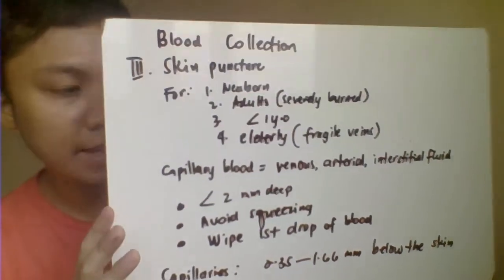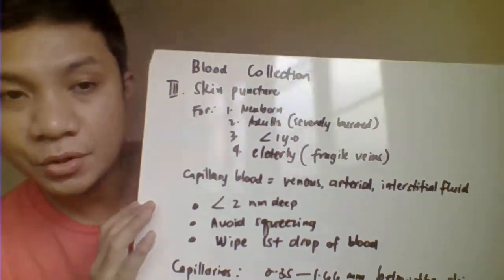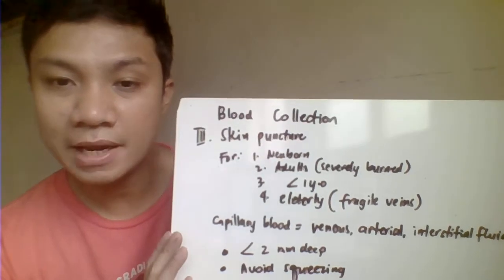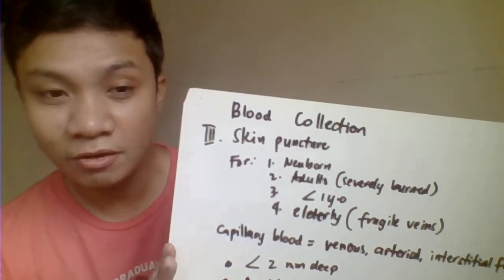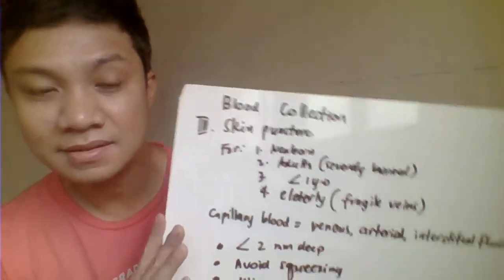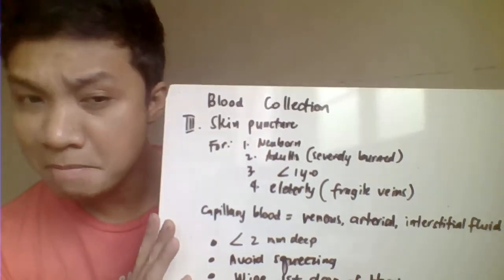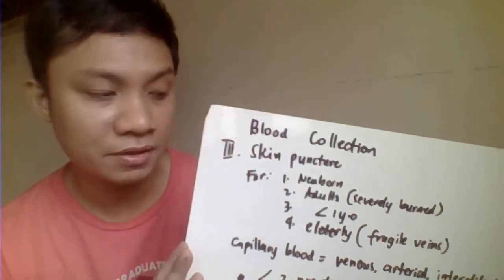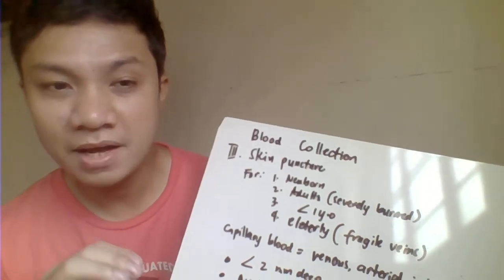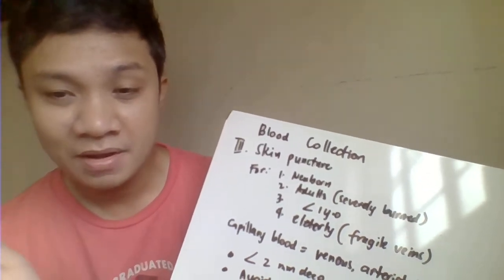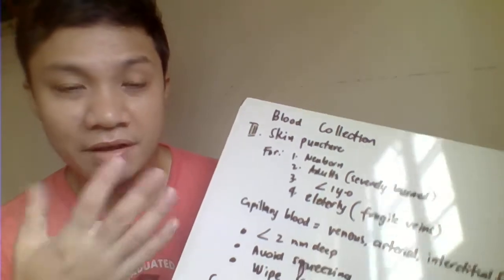Now we go to the different blood collection methods. The choice of blood extraction method is highly dependent on how much blood you are going to collect, what tests you are going to perform, and what instruments you are using — whether manual or automated method. The blood collection procedures include skin puncture and venipuncture.